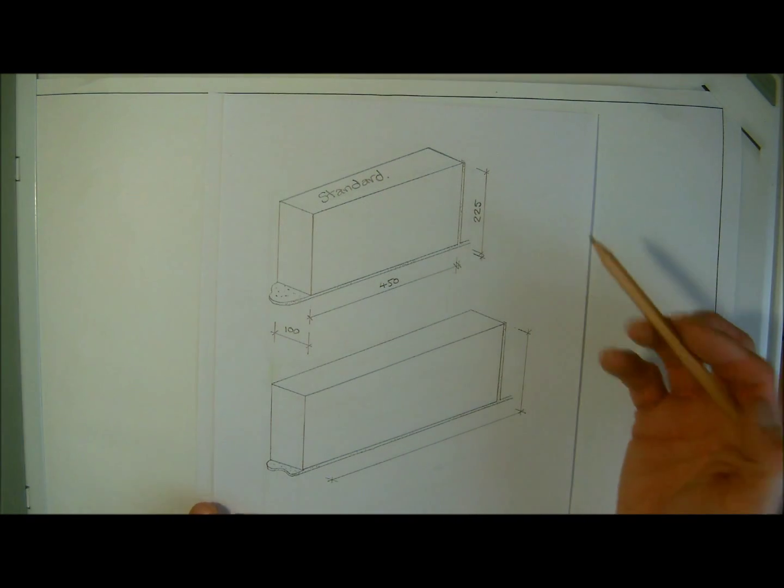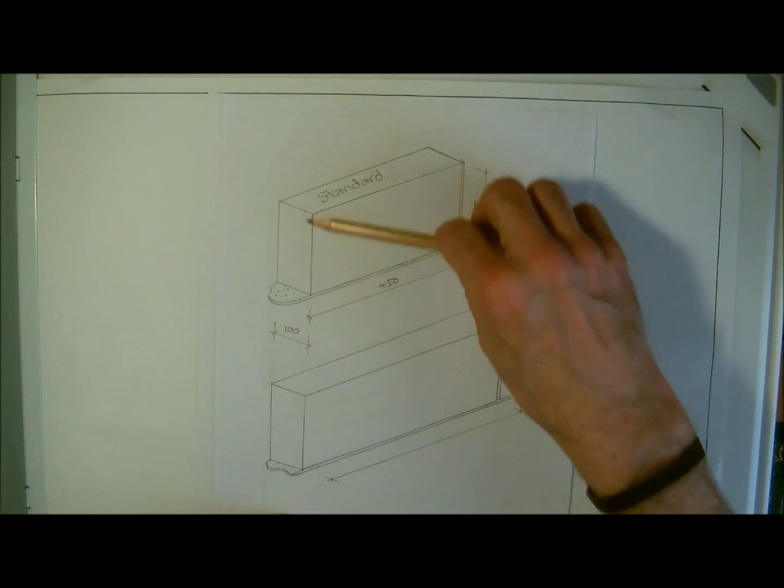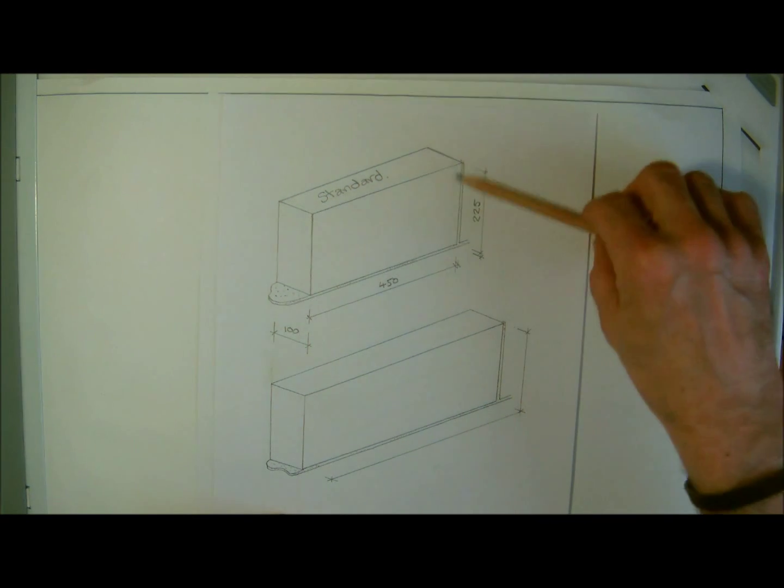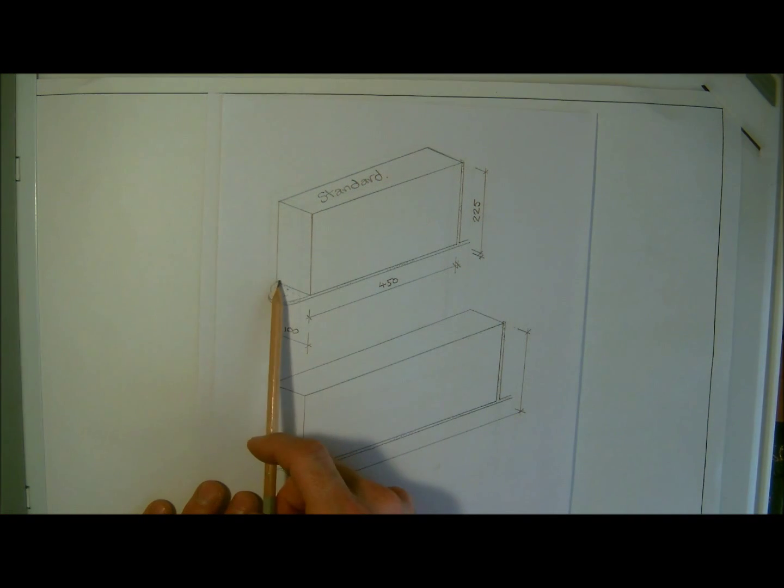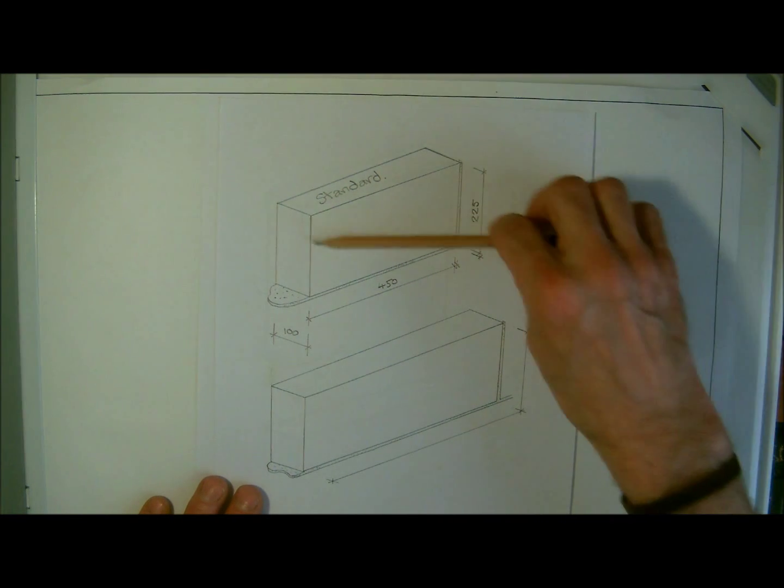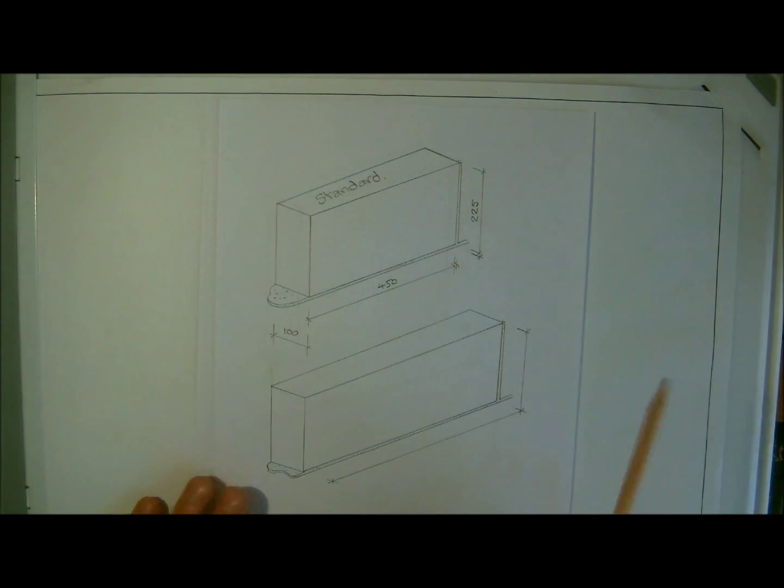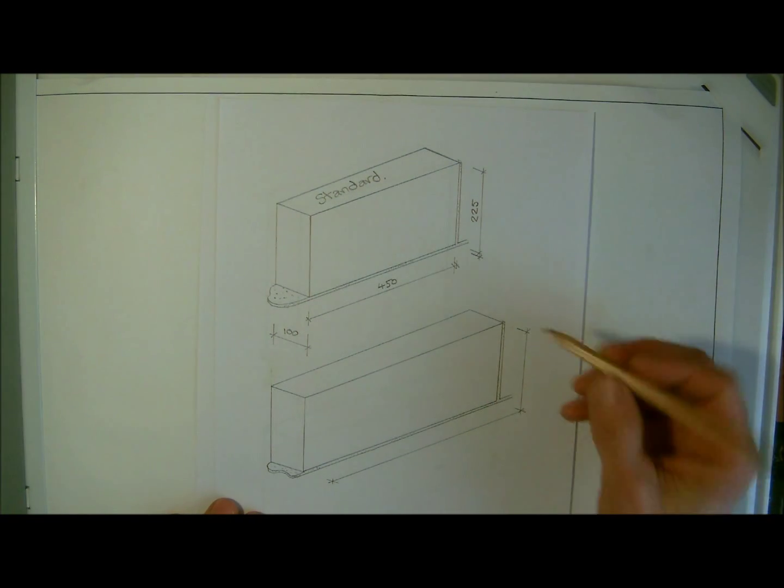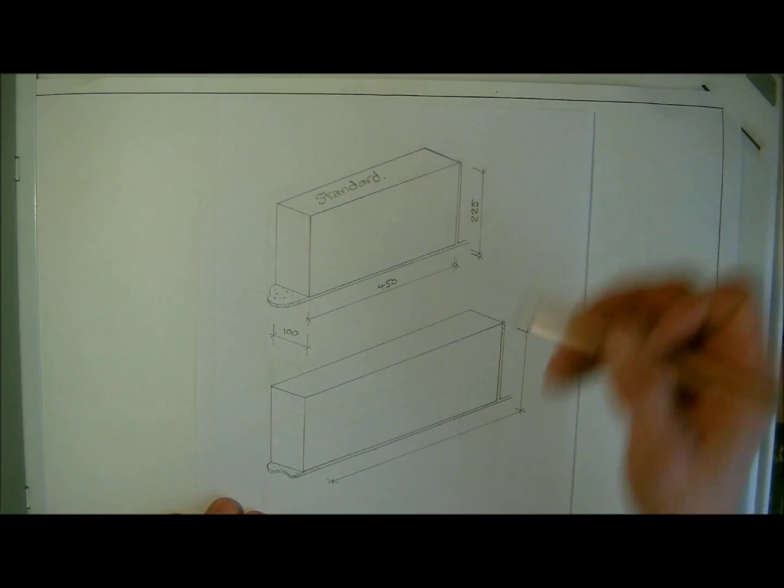But again, for any calculation for block work, it's just the surface area that we need. Later on, when we come to do the mortar, then obviously we would have to include for any extra thickness of this block. But just for working at the surface area, we just need to have the actual front face of the block with the two dimensions. So the standard block, as we just said, is 450 long by 225 high with the joints.